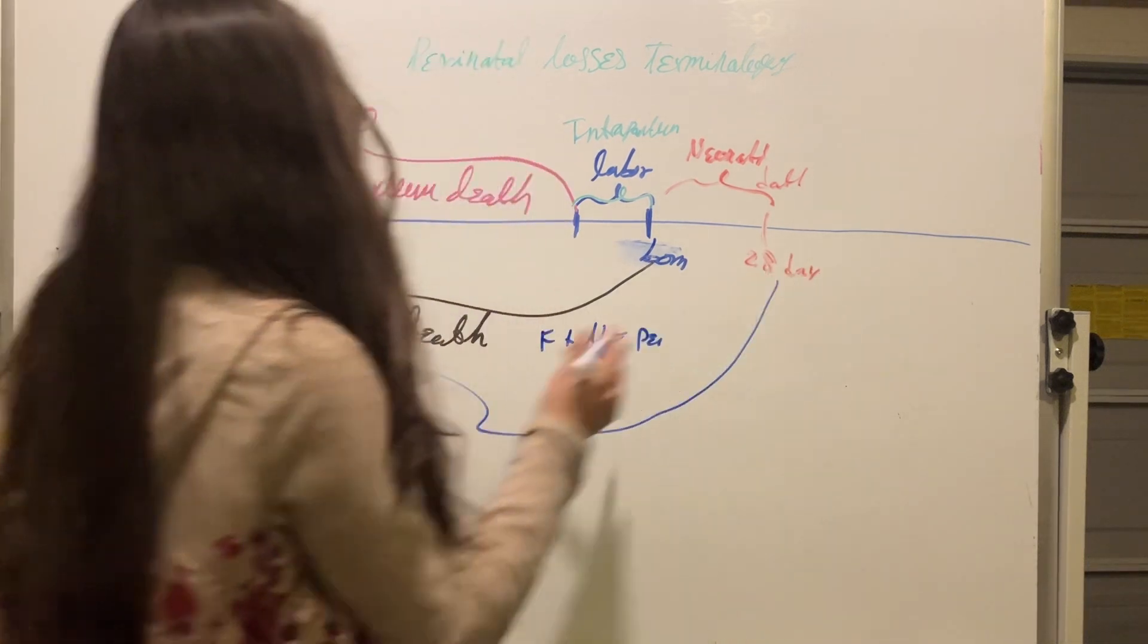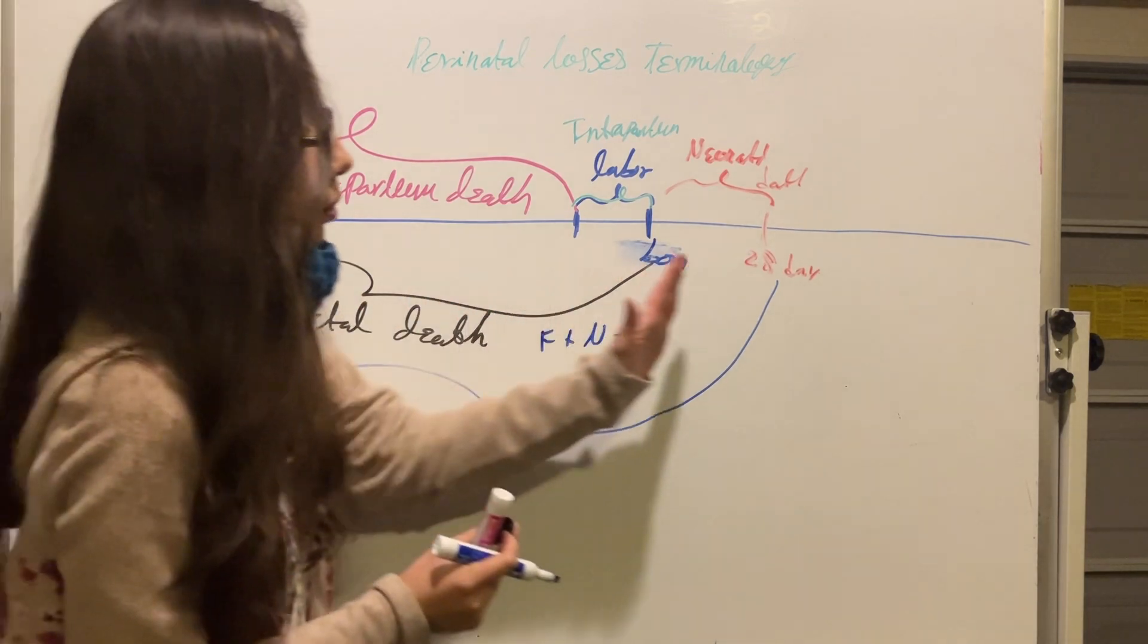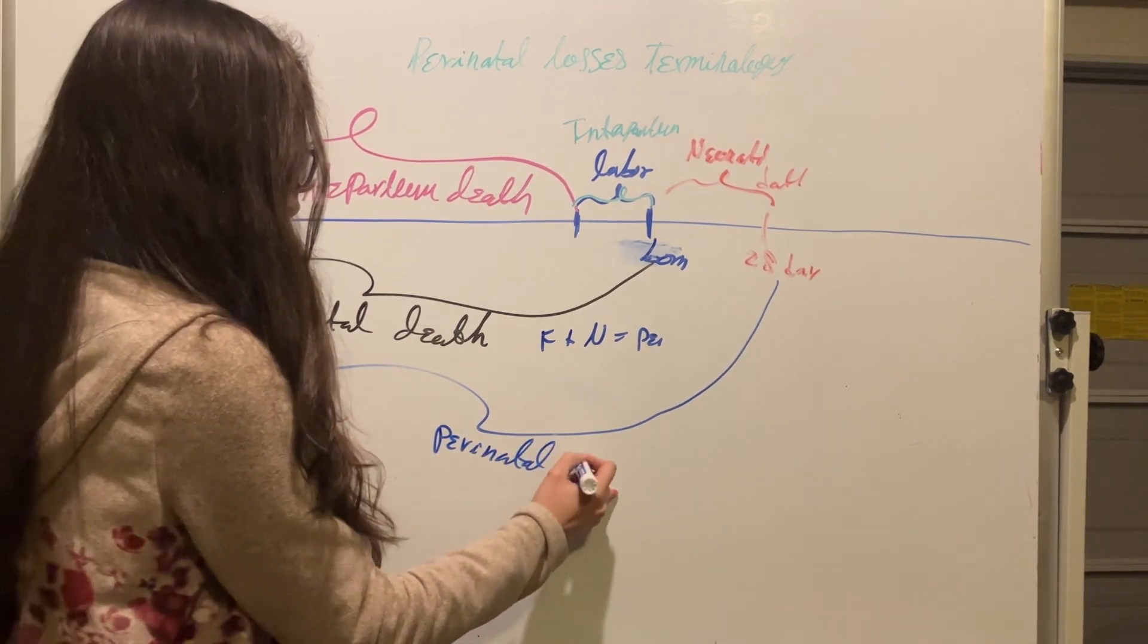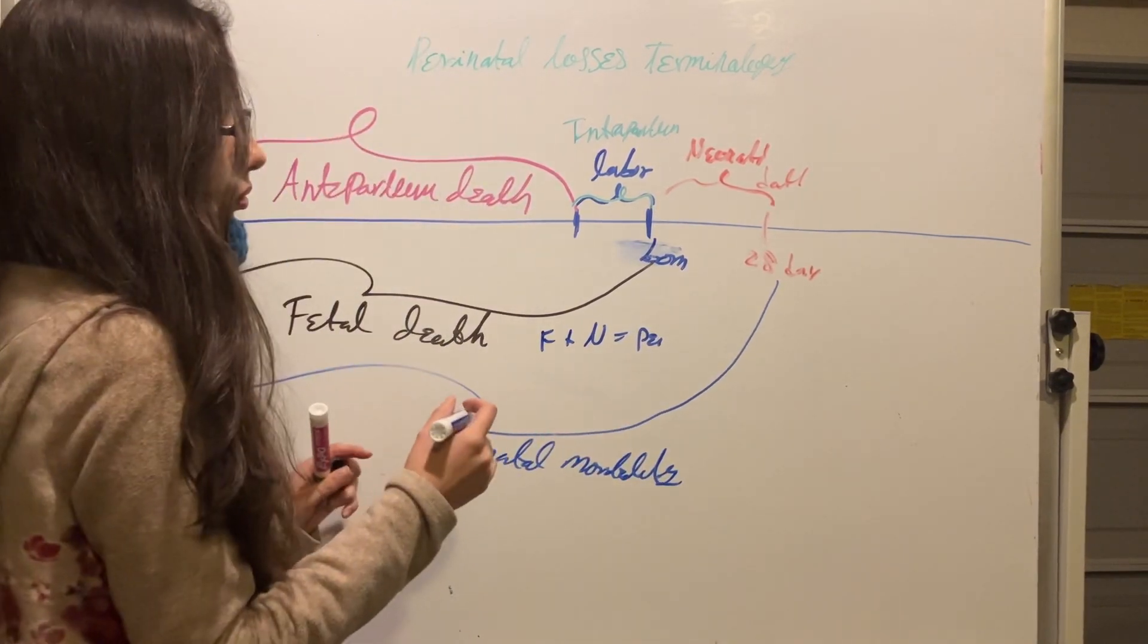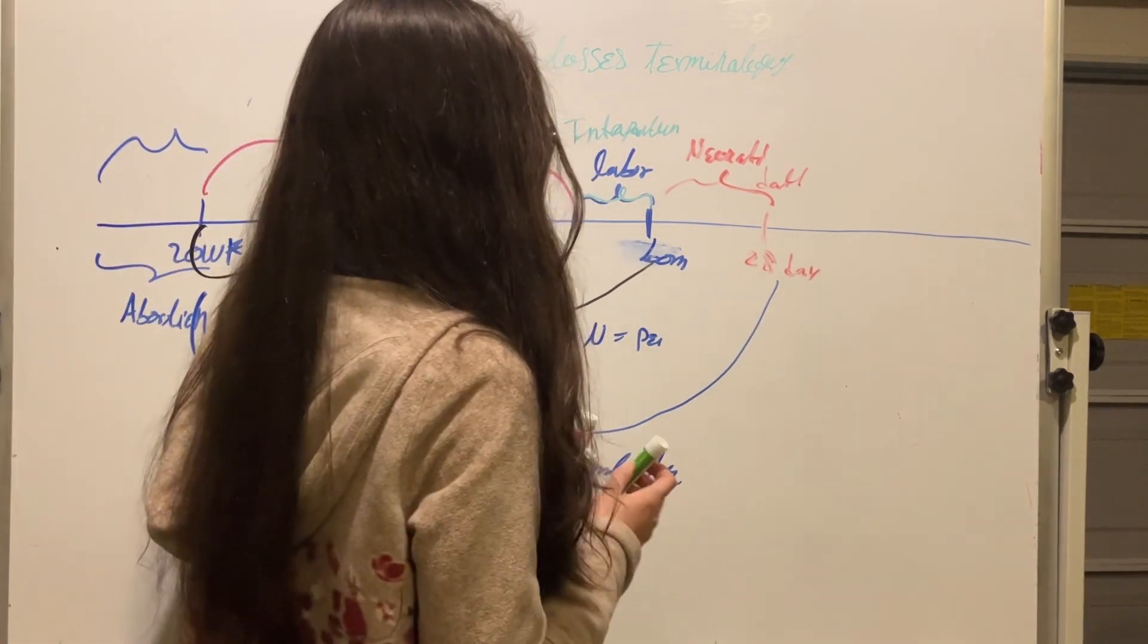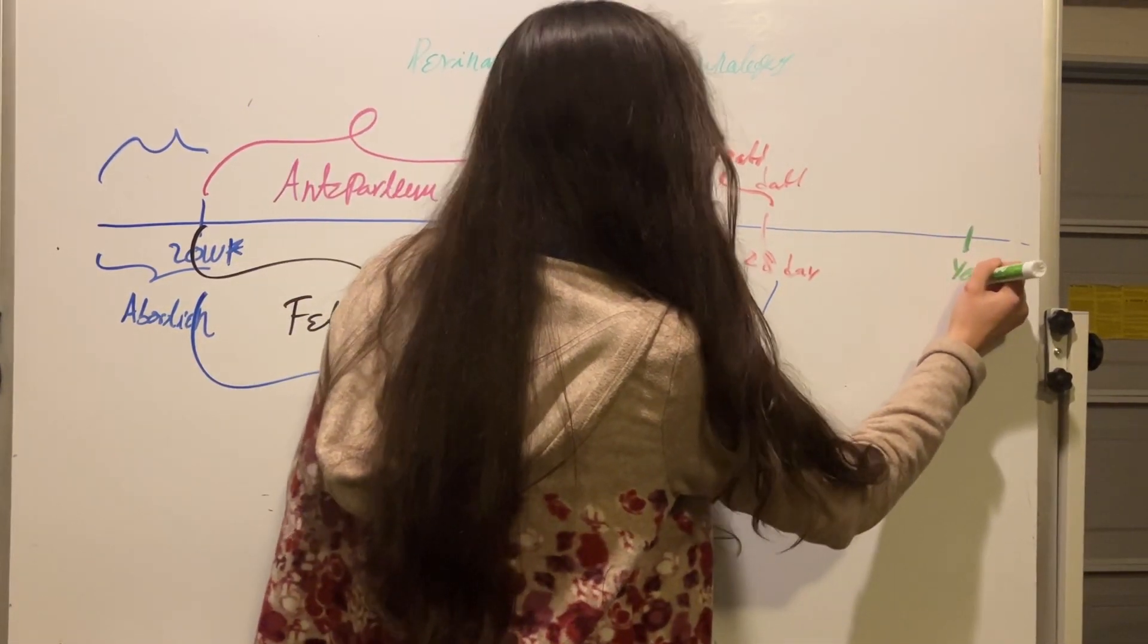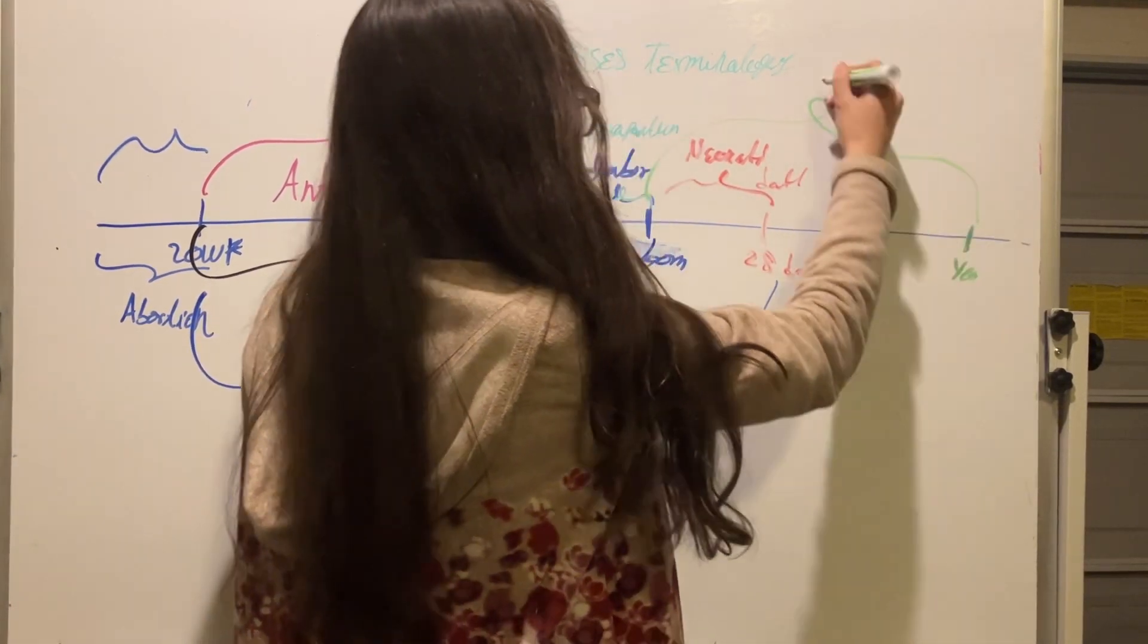So, death of the fetus from 20 weeks up to when the baby is 28 days old, this is perinatal mortality. And if we have death of the baby from when the baby is born up to 1 year, this is infant mortality.